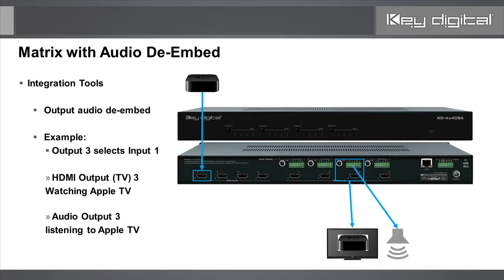There are no audio conversions on there, but first I'd like to clarify how the output audio de-embed feature works, because it is one of the more common confusion points when working with this product. It's a great integration tool but you have to know how to use it. It is an output audio de-embed. So in this example, output three is selecting input one — the Apple TV. Output three HDMI is watching the Apple TV, and the analog and digital audio outputs are listening to the Apple TV audio signal.